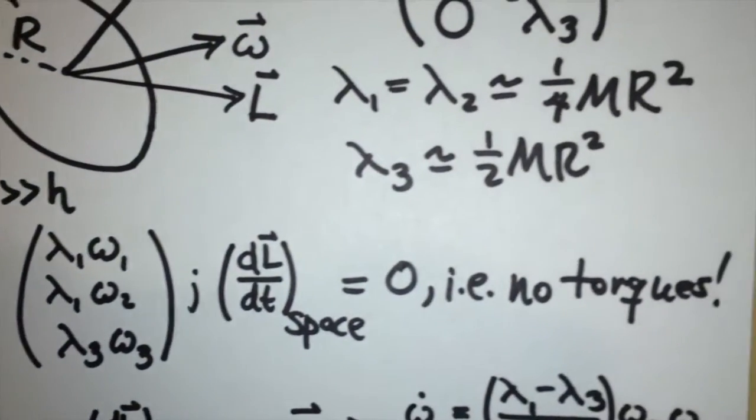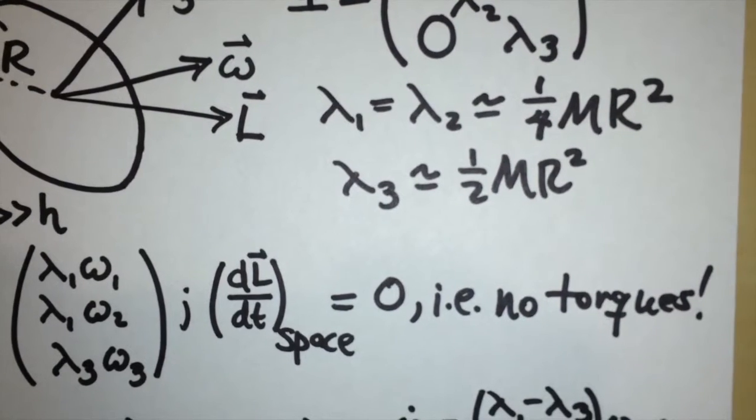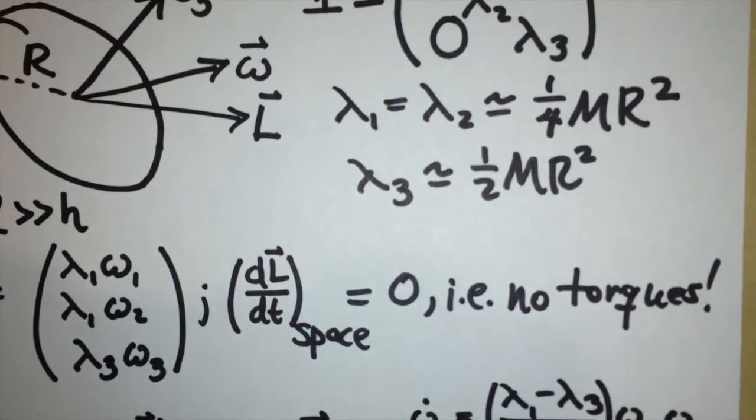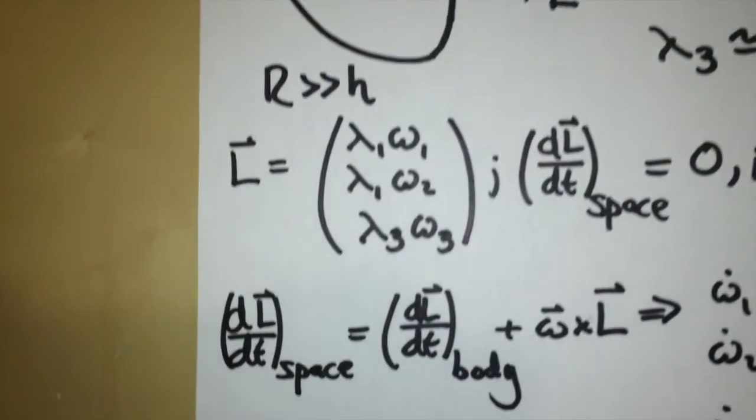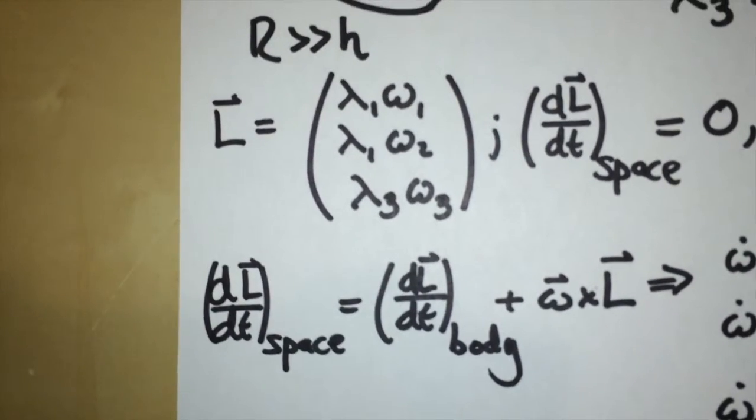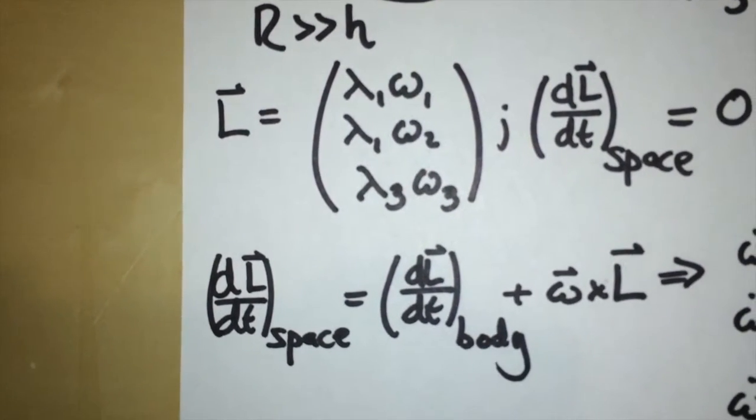Now, because we have no torques, that is, this is free precession, in the inertial frame not attached to the disk, the change in the angular momentum vector with time should be zero. And we can use our rotational dynamics equation to relate that to the change in the angular momentum vector as seen in the rotating frame of the disk.